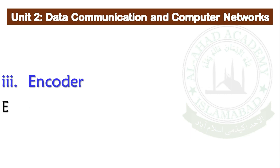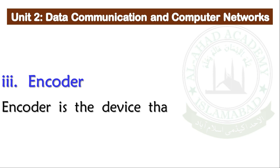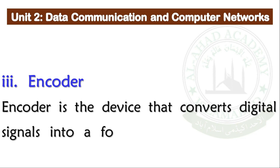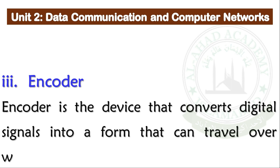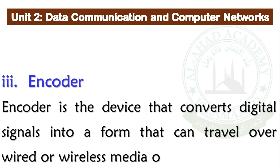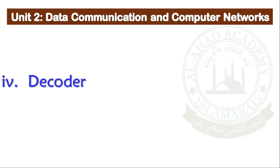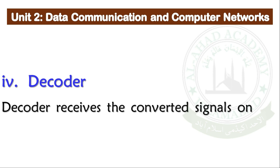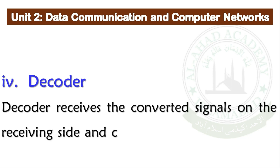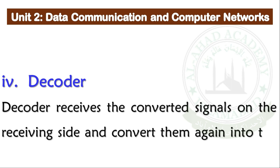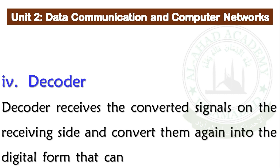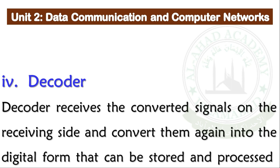Encoder: An encoder is the device that converts digital signals into a form that can travel over wire or wireless media on the sender's side. Decoder: A decoder receives the converted signals on the receiving side and converts them again into the digital form that can be stored and processed.